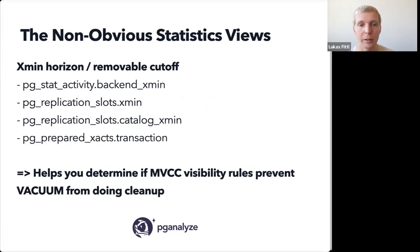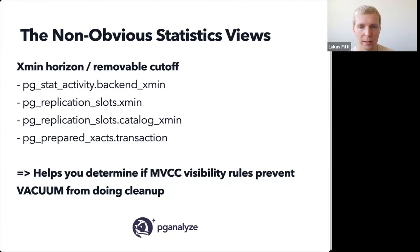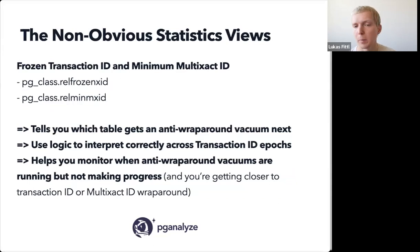There are a couple of non-obvious things. Our goal with Vacuum Advisor is especially to bring you those, because they are tricky to work with — people have been copy-pasting very long queries and writing a lot of scripts to deal with these problems. The first is the X-Men Horizon, or what's nowadays called removable cutoff. This essentially controls how many dead tuples autovacuum is allowed to remove. What's challenging is there is not a single place you can look at it. You actually see this in blocks, but you don't have a good way of knowing what that cutoff is at any given moment.